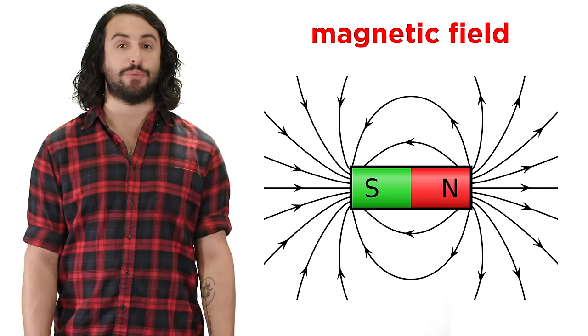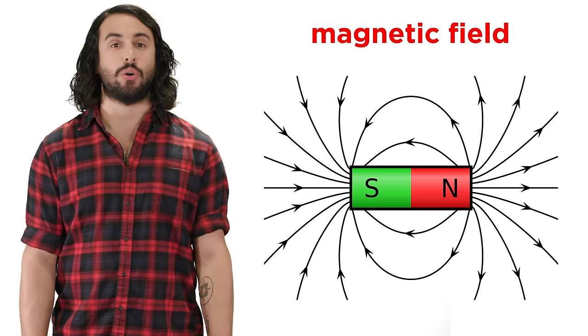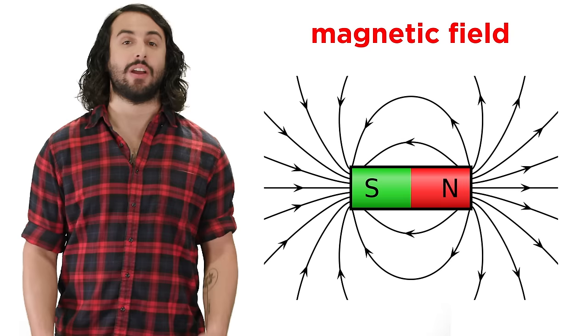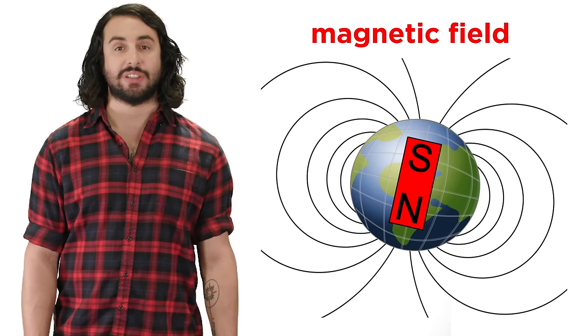A magnetic field can be depicted using field lines, just like an electric field, and though they will appear to begin at the north pole of the magnet and end at the south pole, they have no true ends, they are closed loops that continue through the magnet itself.